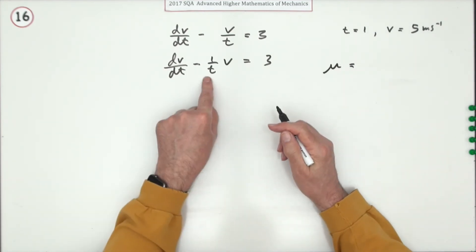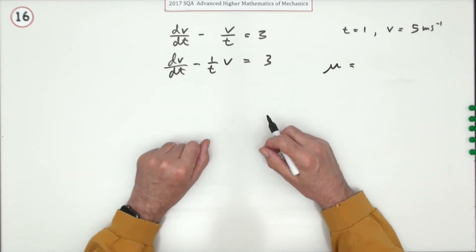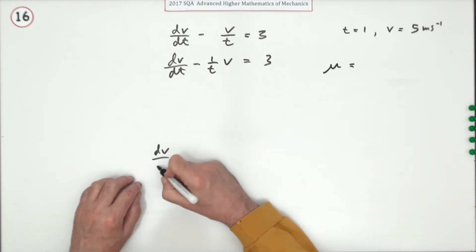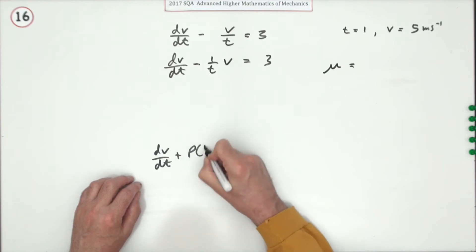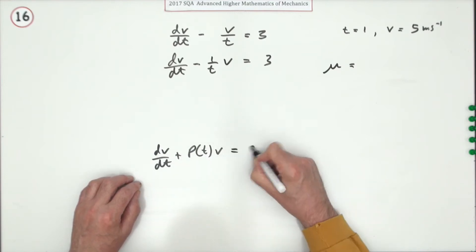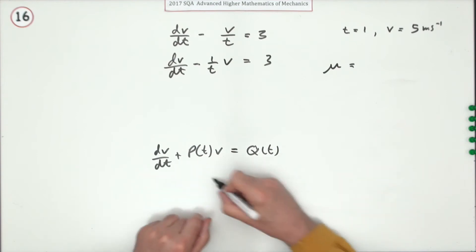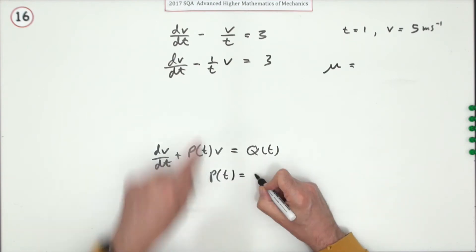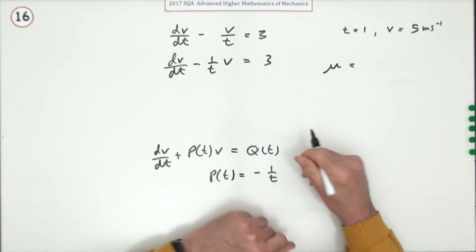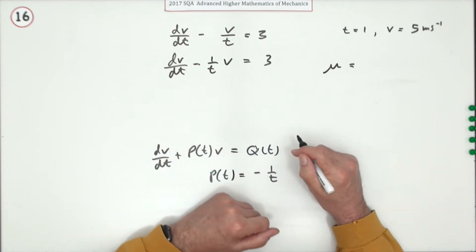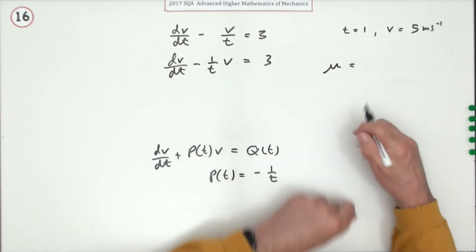You could state separately, because there is a standard form which looks like dv/dt plus some function of t times v equals some other function of t, and then identify that as the negative 1/t. You can do that if you like and then integrate it, but you could just jump straight in here.